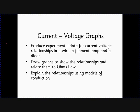So we're going to produce some data for current voltage relationships in three specific examples they state: a wire, a filament lamp, and a diode. We're going to look at the graphs of those relationships and relate them to Ohm's law, and we're going to explain the relationships using some simple models of conduction.